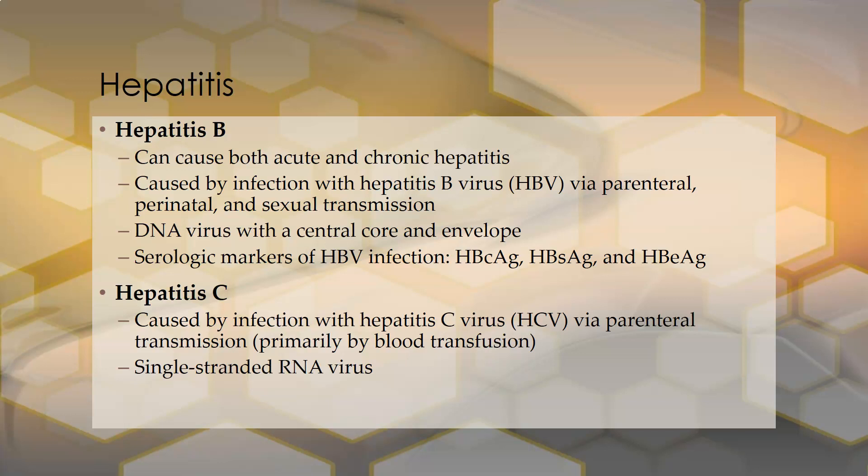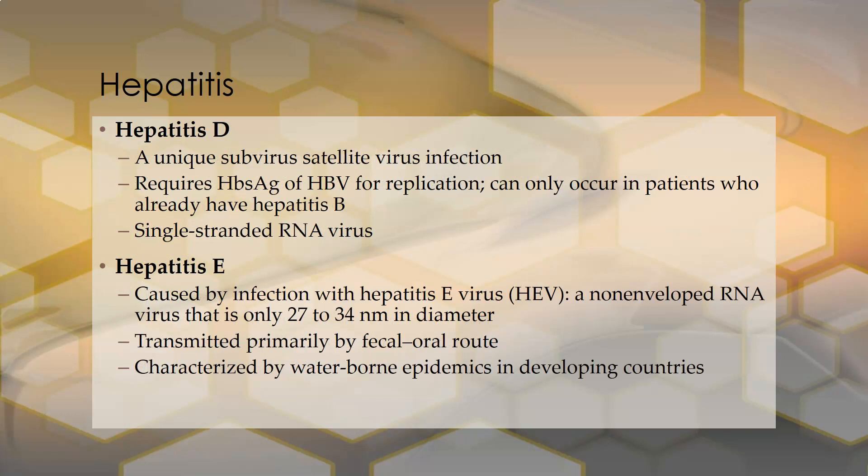Hepatitis C is caused by infection with the hepatitis C virus via parenteral transmission, primarily blood transfusion, but also the sharing of needles. It is a single-stranded RNA virus. Hepatitis D is a unique subviral satellite virus infection that requires the hepatitis B surface antigen of hepatitis B virus for replication. It can only occur in patients who already have hepatitis B, and hepatitis D is also a single-stranded RNA virus.